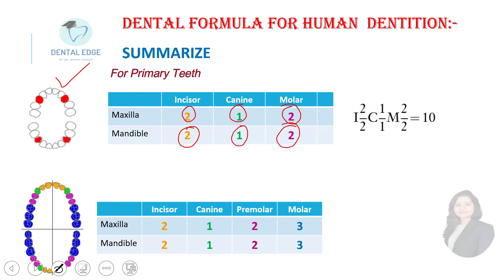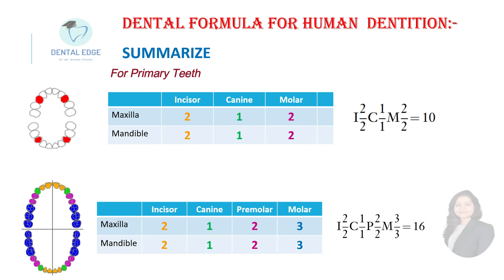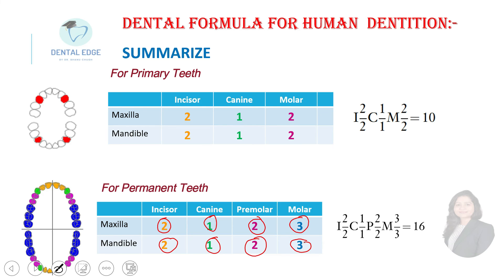Let's summarize both formulas. For primary teeth: I 2/2, C 1/1, M 2/2. For permanent teeth: two incisors, one canine, two premolars, and three molars in both upper and lower arch — written as I 2/2, C 1/1, P 2/2, M 3/3. This is how we write the dental formula.